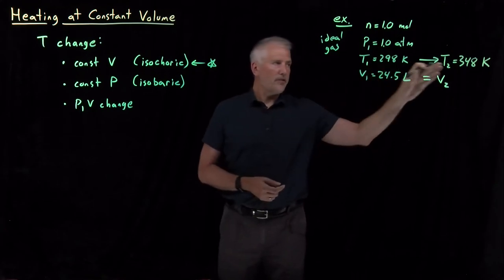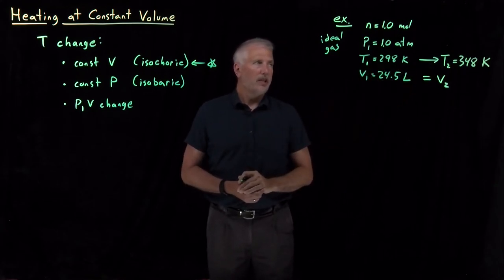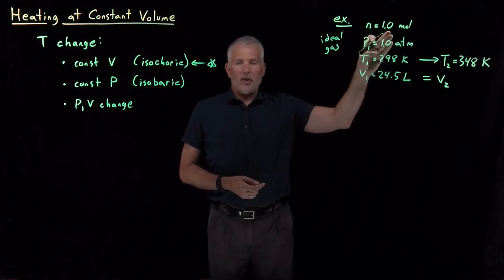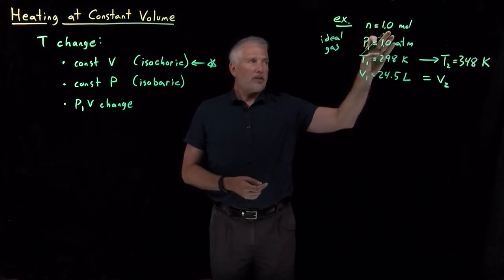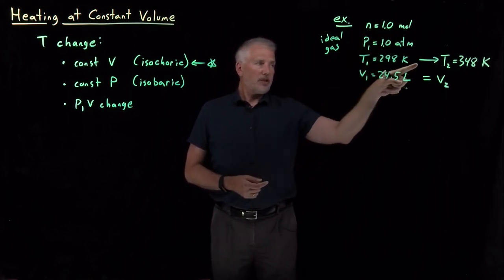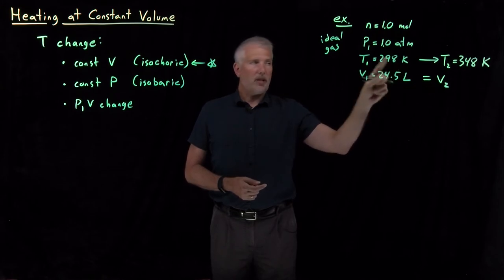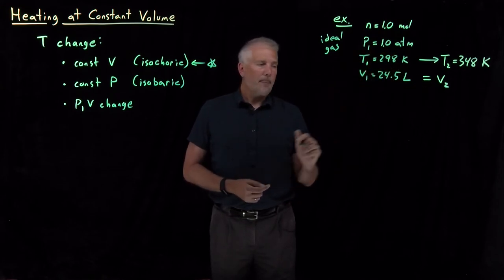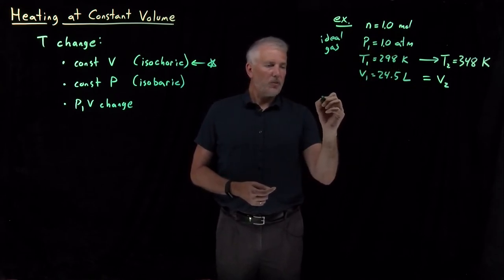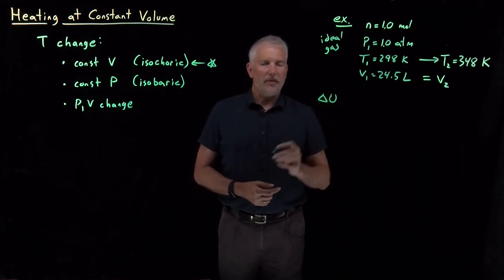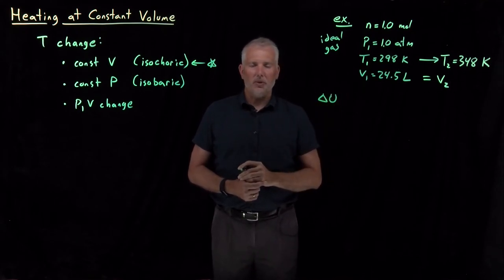The temperature change is 50 Kelvin or 50 degrees Celsius. I'm not going to gain or lose any molecules of the gas out of the box, so n is not going to change. But because the temperature is changing and the volume is being held constant, the pressure will change. And our question now is, what are the values of these thermodynamic variables like delta U and Q and W?